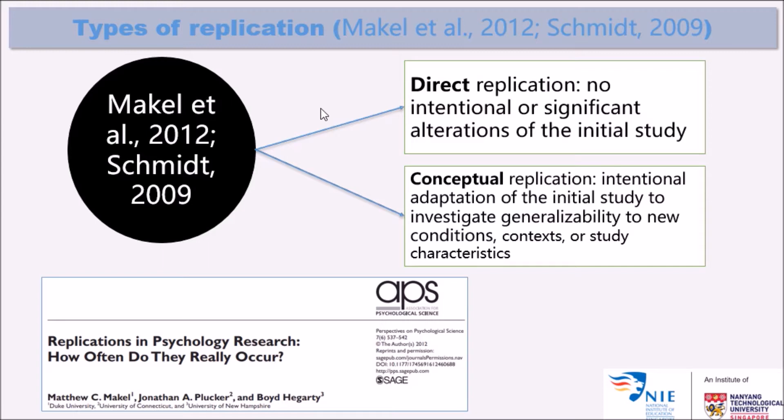A direct replication refers to a condition in which no intentional or significant alterations of the initial study are applied. By contrast, a conceptual replication refers to the intentional adaptation of the initial study to investigate whether the results achieved in the first condition can be extrapolated to new conditions, new contexts, or new study characteristics.